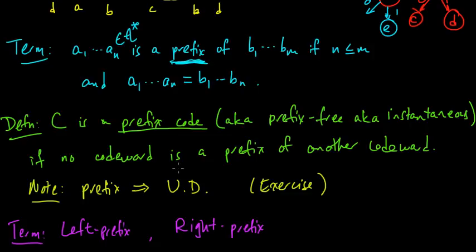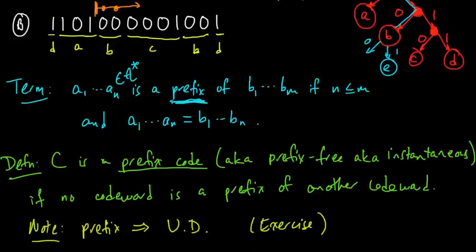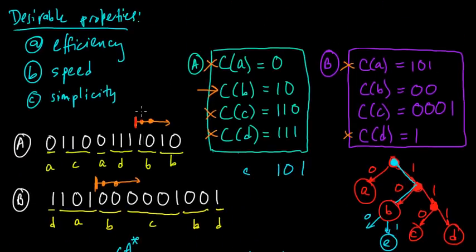In the previous video we defined prefix codes and saw that they were nice in terms of our criteria of speed and simplicity. They were speedy because we could instantaneously, as we read the encoded symbols, as soon as we got to the end of an encoded codeword, immediately read off what the corresponding source symbol that generated it was.